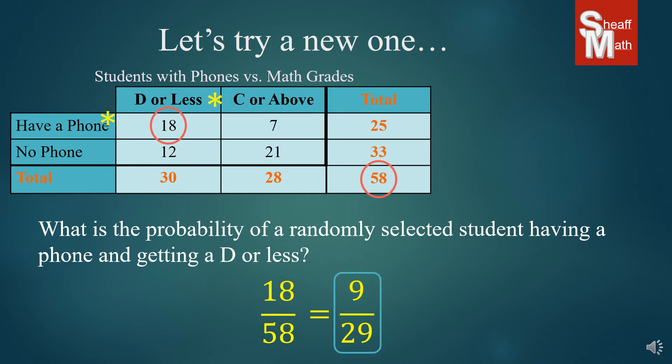We have a 9 in 29 chance of asking a kid having a phone and getting a D or less grade.